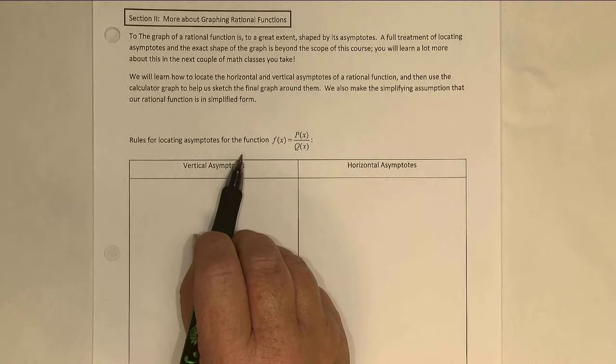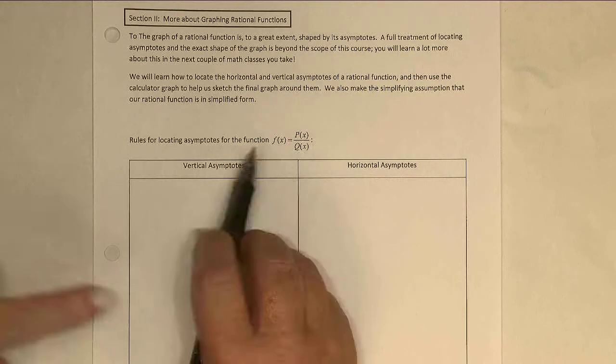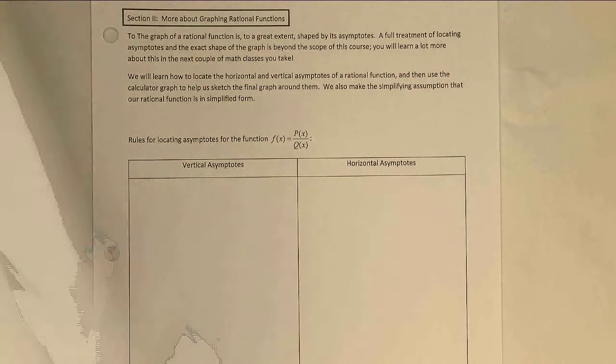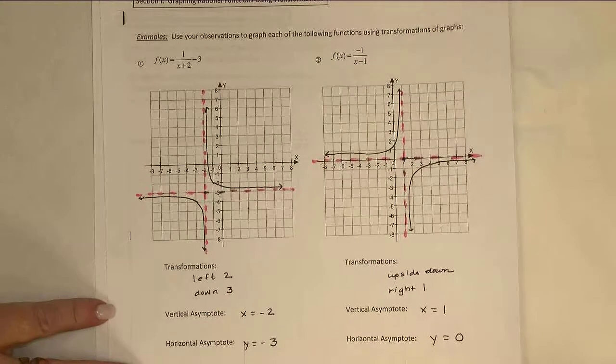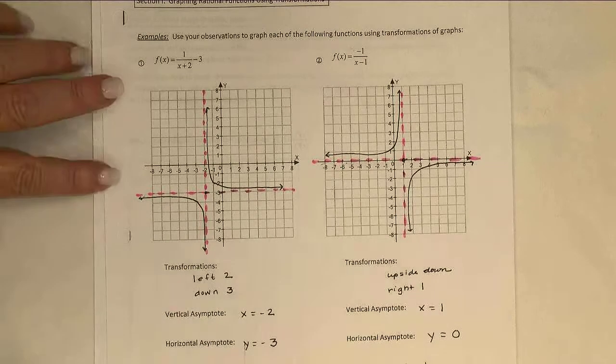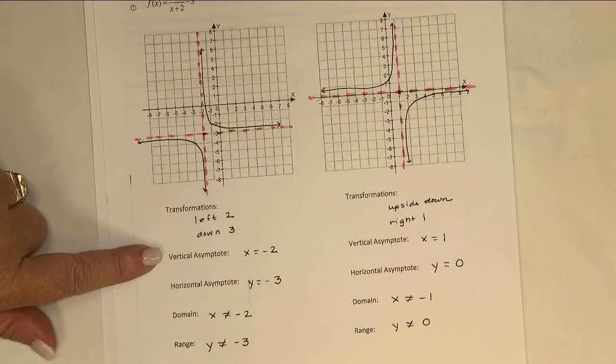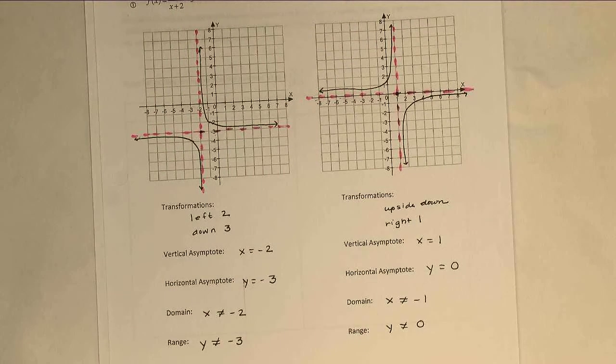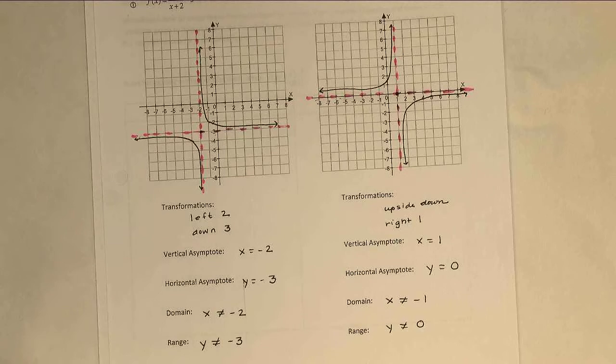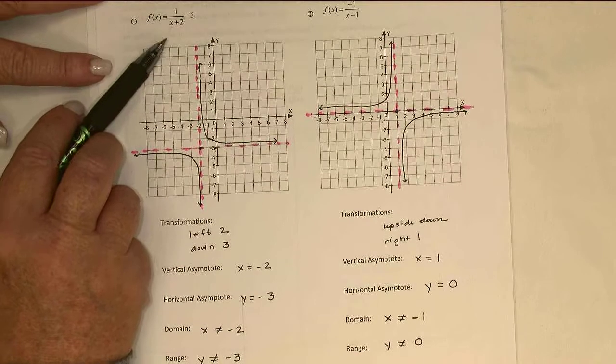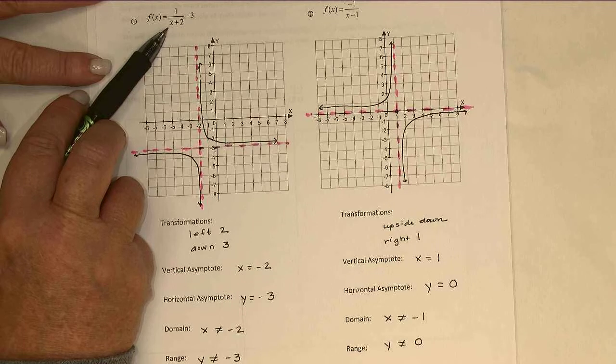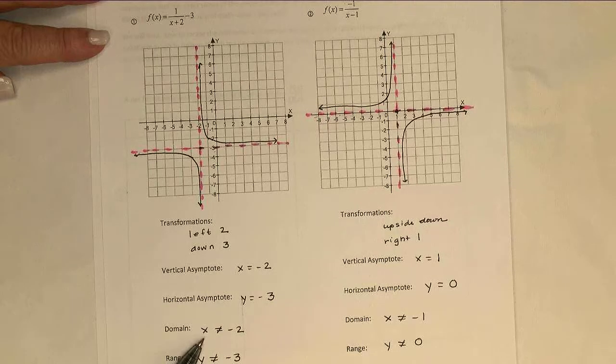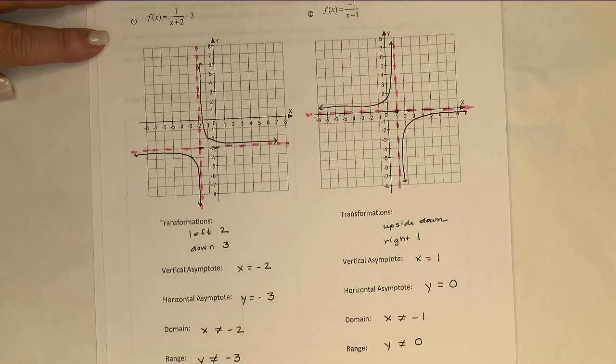If I have a function f of x equals p of x over q of x, which I'm going to assume is in its simplified form, we really have already talked a bit about how to find those vertical asymptotes. Remember back on these last couple of examples, we had commented that the vertical asymptote and the domain were always the same. The vertical asymptote is essentially an x value that isn't part of the domain.